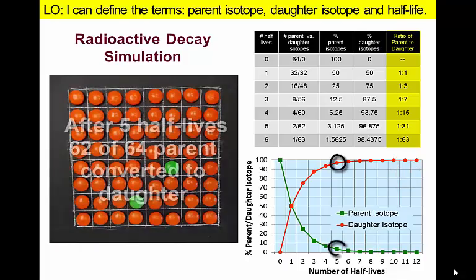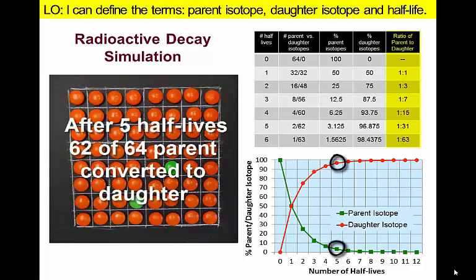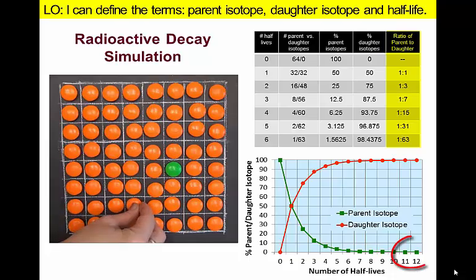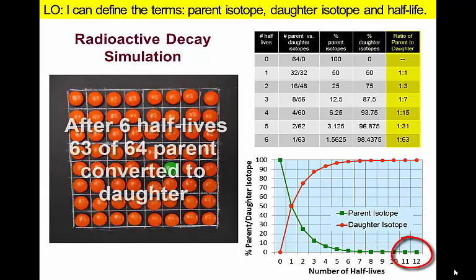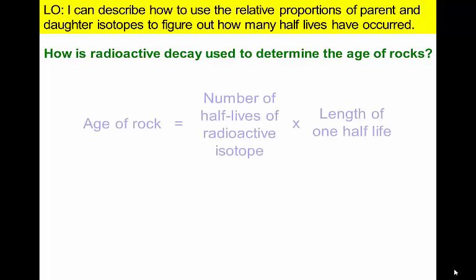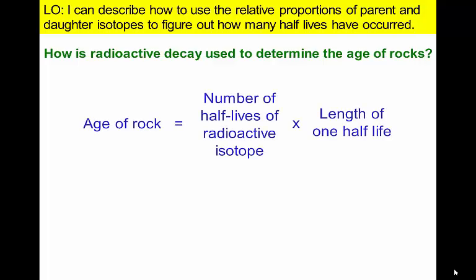It is these ratios that geologists are measuring when they determine the age of a rock. Eventually, after about a dozen half-lives, there will be so little parent isotope left that it will become difficult to obtain an accurate date for the rocks. Once we know how many half-lives have occurred, we can multiply that number by the length of one half-life to determine the age of the rock.